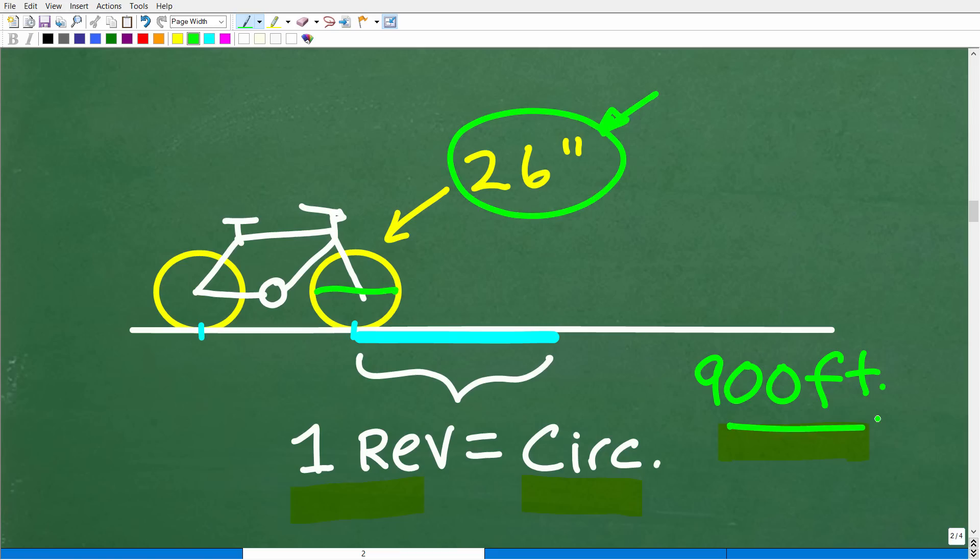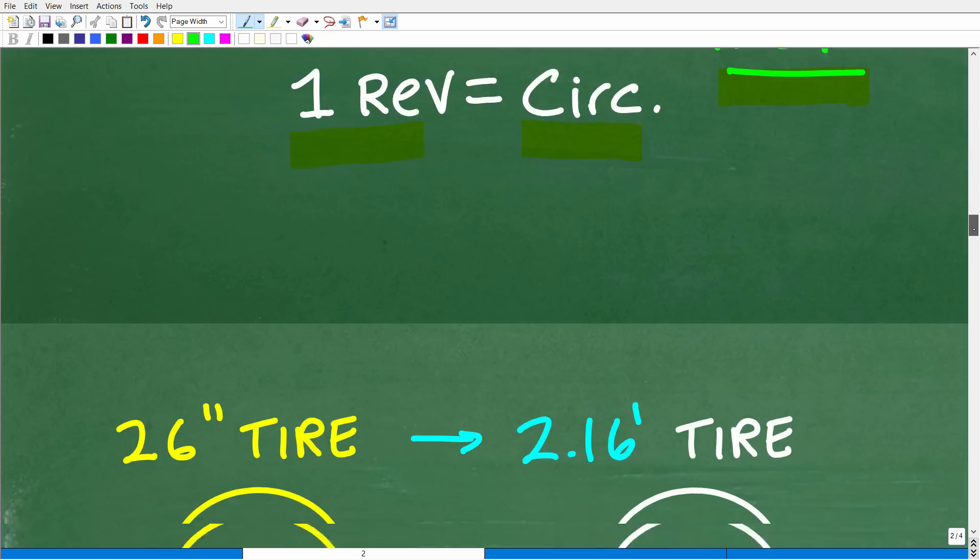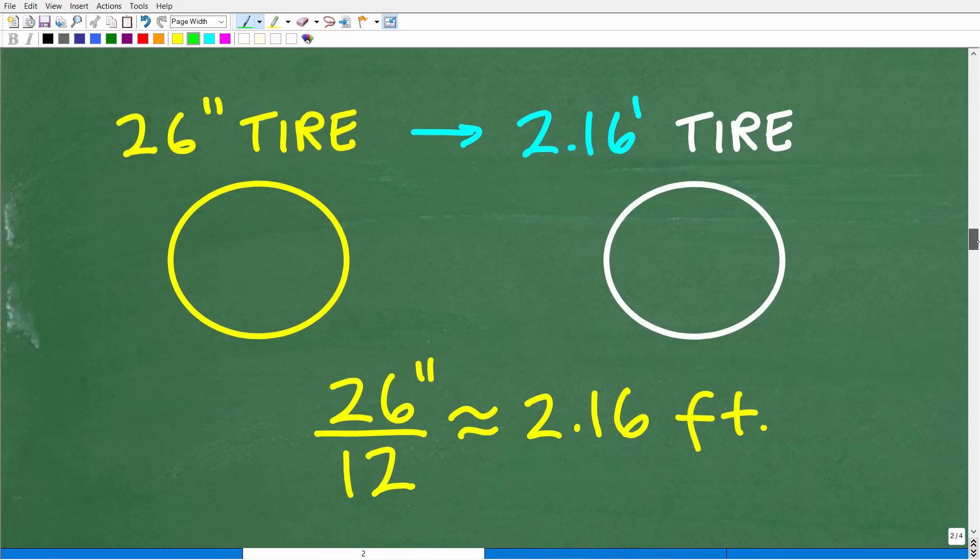So I'm going to go ahead and convert inches to feet. Now you could have just as well converted feet into inches, but it's up to you. It doesn't make a difference; the answer would still work out. So let's go ahead and do that now. A 26-inch tire, in other words, that's the width or the diameter of the tire, is the same thing as a 2.16-foot tire. This is an approximation.